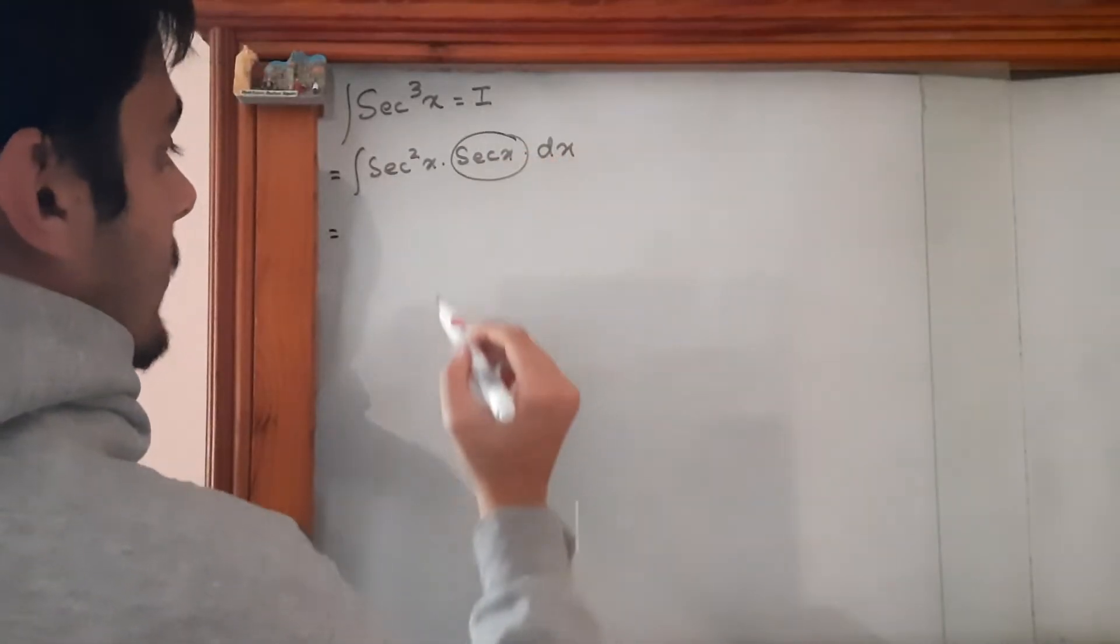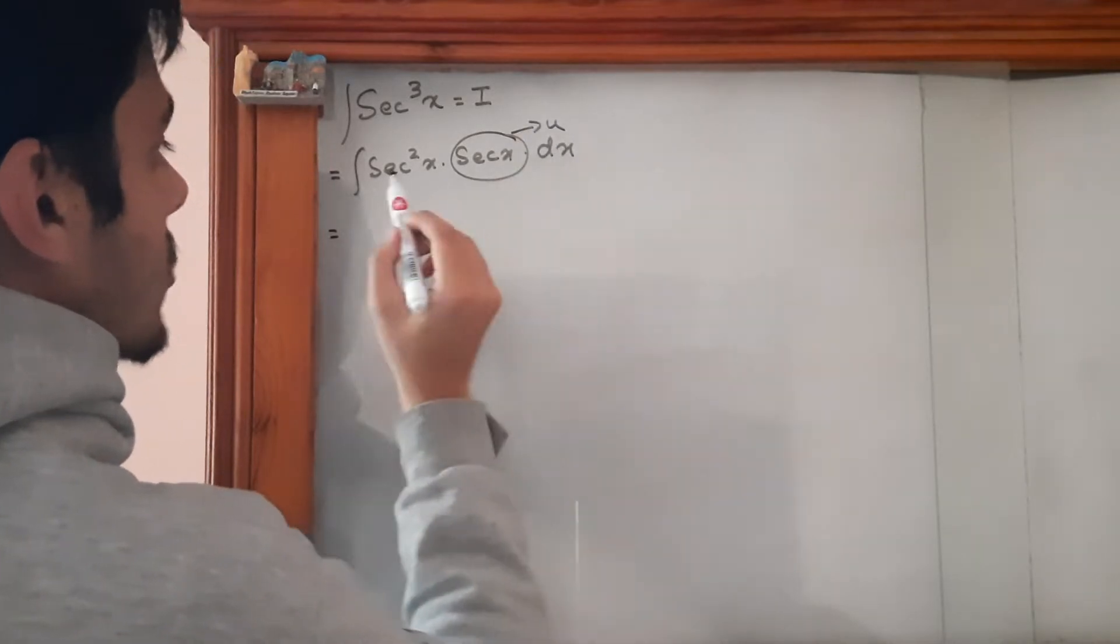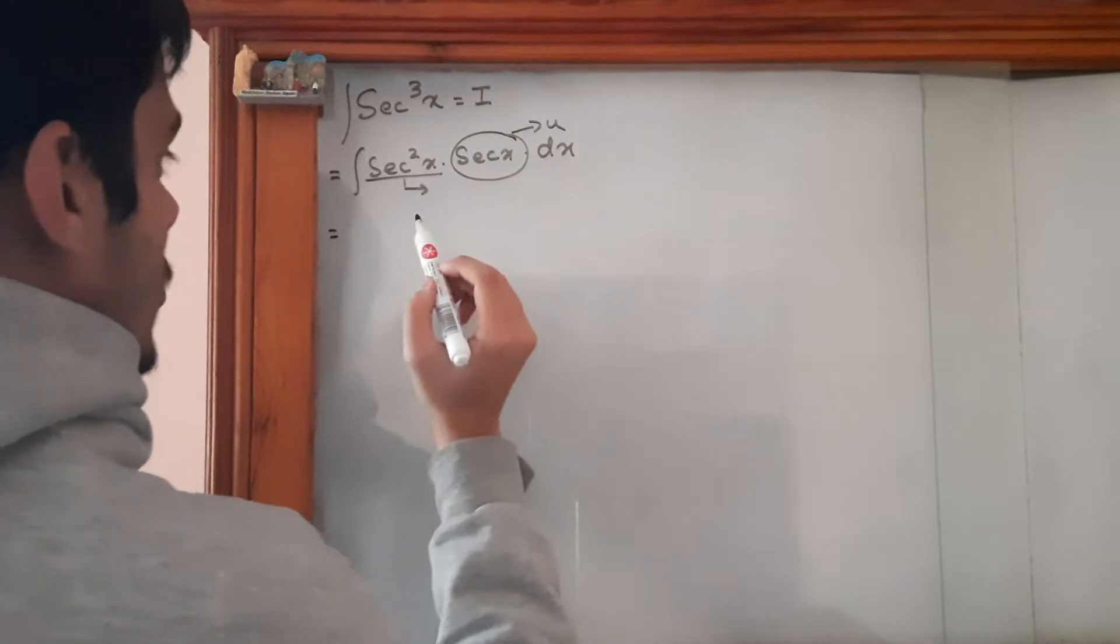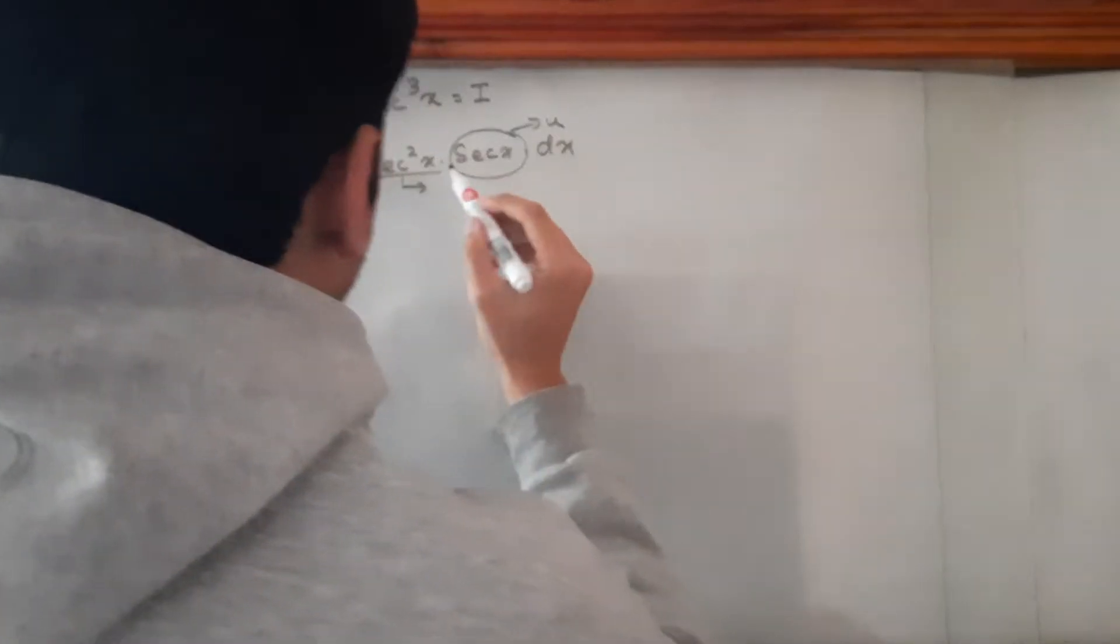We know the derivative of secx, so let's suppose this to be u, and we also know the integration of sec²x, so let's suppose this to be v.